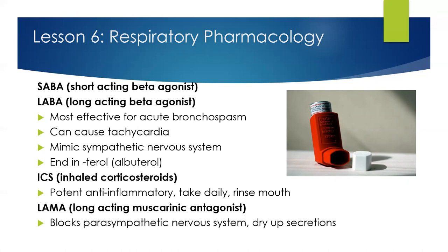Inhaled corticosteroids, or ICS inhalers, are used for more long-term treatment of asthma and COPD because they suppress airway inflammation and reduce airway hyper-responsiveness. And finally, the LAMAs — the long-acting muscarinic antagonists — block the parasympathetic nervous system to try to dry up secretions, which in turn causes a bronchodilator effect.